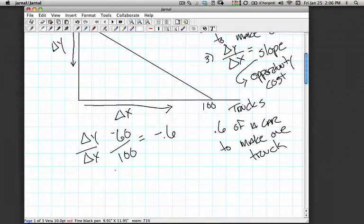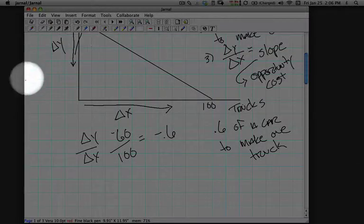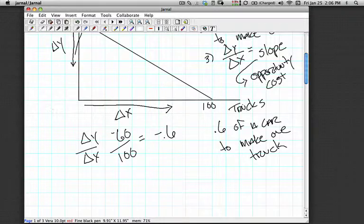Note also that in order to go the other way, the inverse of that, the inverse of negative 0.6, would represent the opportunity cost of making cars in exchange for trucks. Because in order to move up in terms of y, the firm has to move to the left in terms of x, and that's the inverse of the slope.